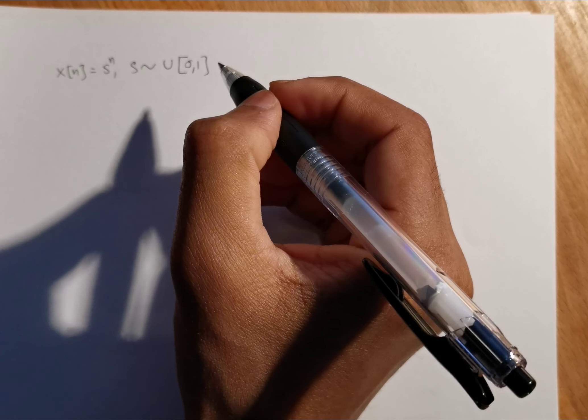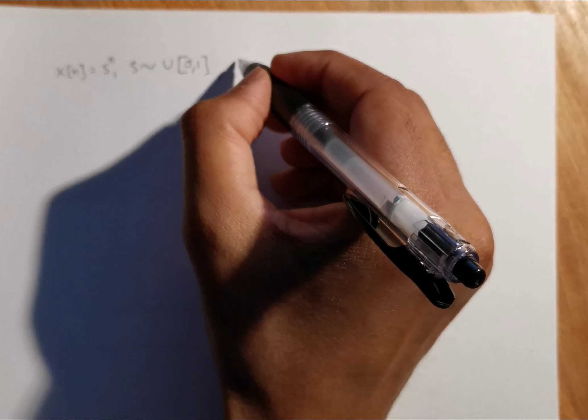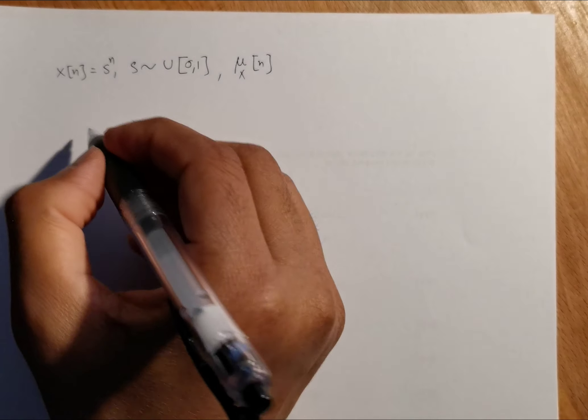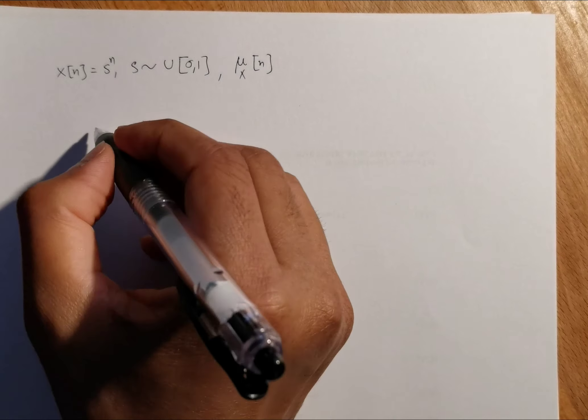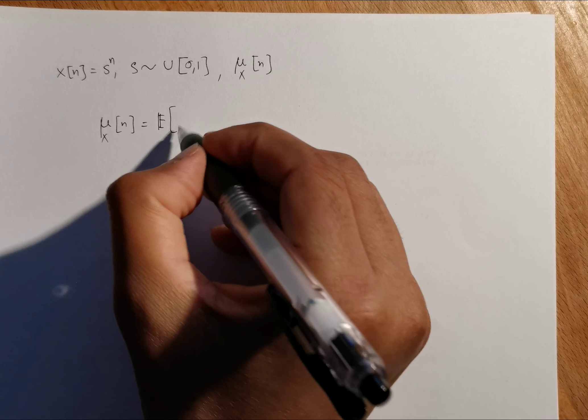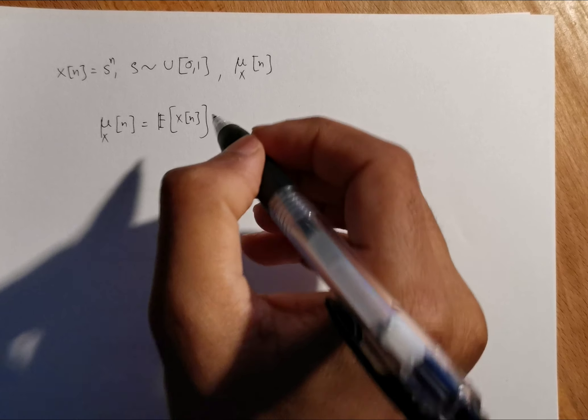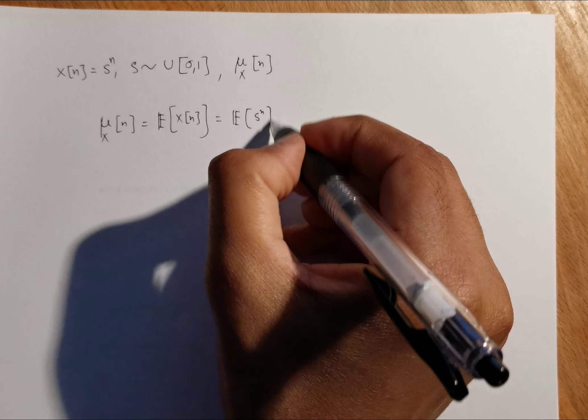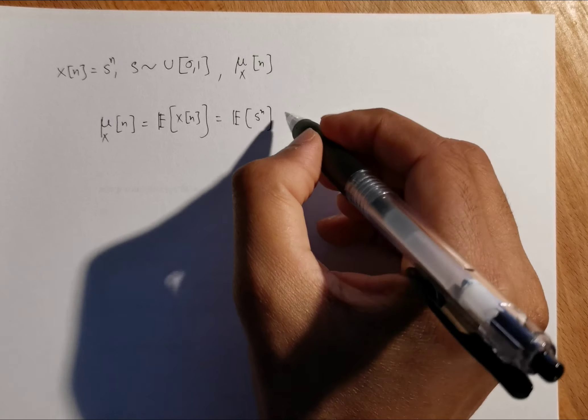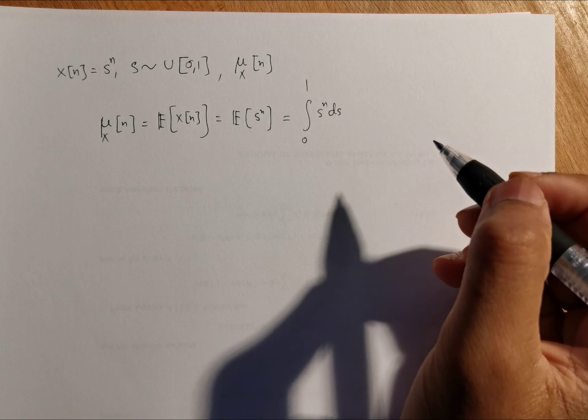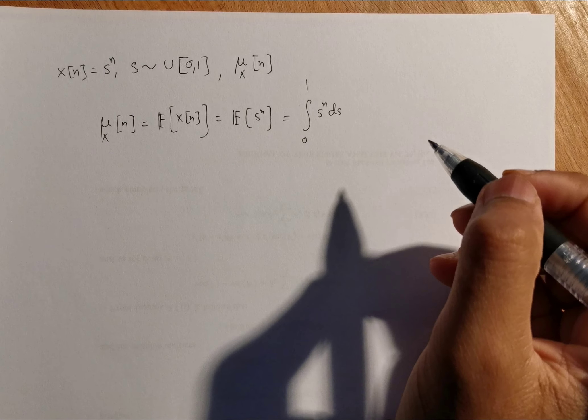You need to find the mean function μ_x(n). Clearly from definition, μ_x(n) is the expectation of x(n), which means the expectation of S^n. What is that? The integration from 0 to 1 of s^n ds - simple definition of expectation.